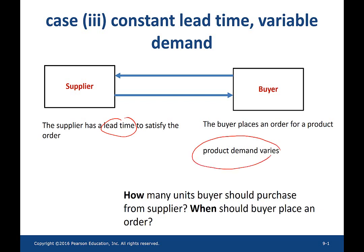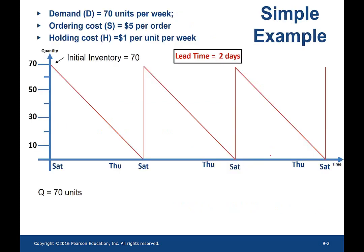The buyer faces the same costs as in case 1 and case 2: total inventory costs, total ordering costs, and the purchase cost. Let us revisit the example we saw in case 2, where the demand is 70 units per week, the buyer has an ordering quantity of 70, and the supplier has a lead time of 2 days.